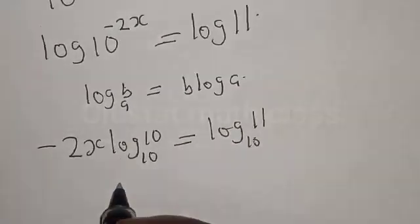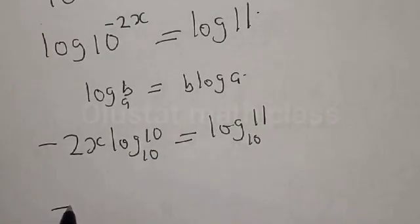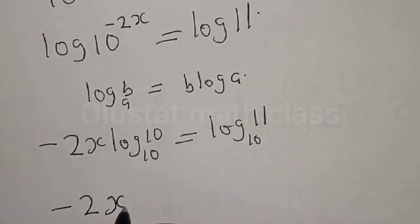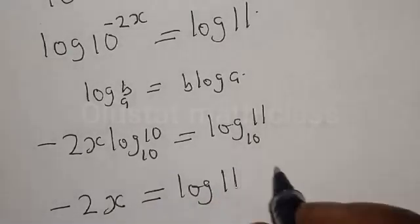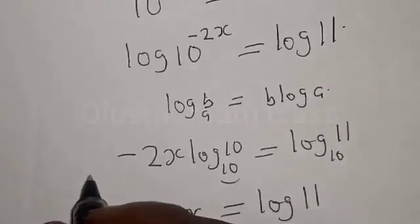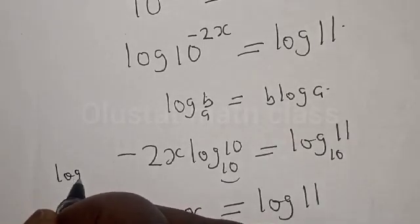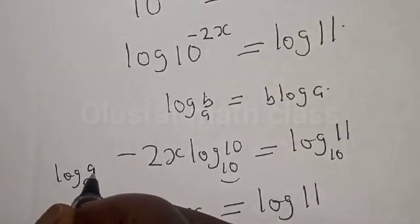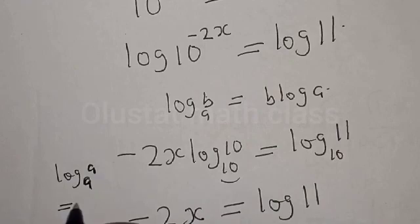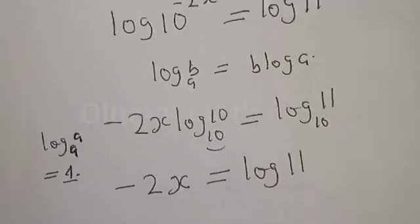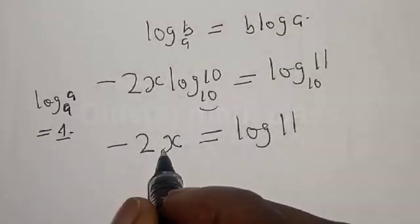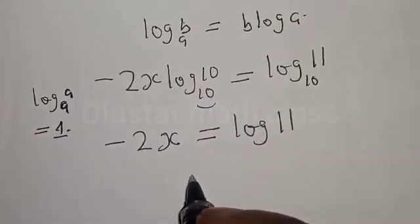Also, we have minus 2s equal to log 11. Remember, if you have log a, base a, it is the same thing as 1. So that is why log 10, base 10, is 1. Then we have minus 2s is equal to log 11.